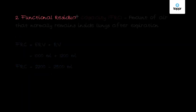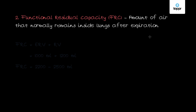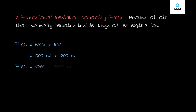Second is the functional residual capacity, or FRC. FRC is the amount of air that normally remains inside the lungs after expiration. The functional residual capacity is the sum of the expiratory reserve volume and the residual volume. The expiratory reserve volume is around 1000 ml and the residual volume is around 1200 ml, so the FRC becomes around 2200 ml, and can go up to 2500 ml.